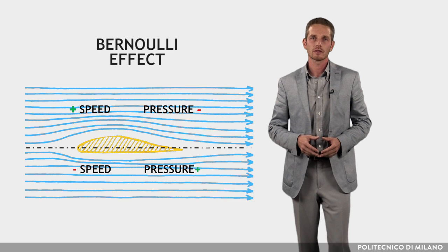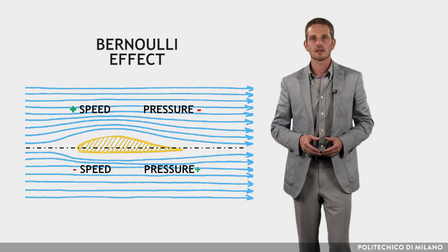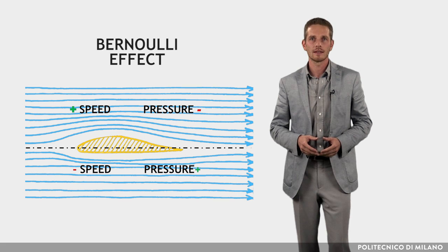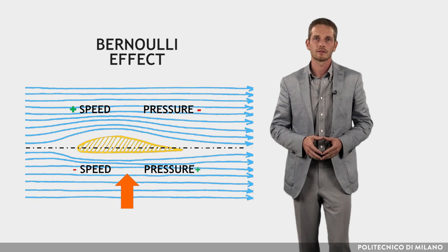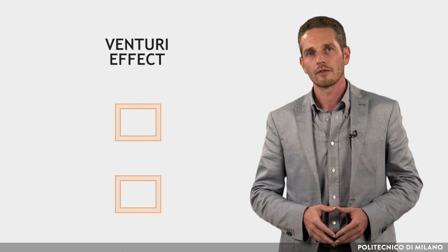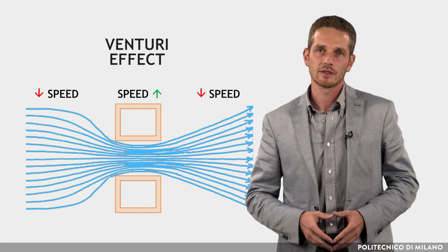This results in greater speed than that of the air flowing beneath it. The pressure at the top is then lower than at the bottom and there is a push from the bottom to upwards. Because of the Venturi effect, when an air stream is forced through a smaller section, its speed increases.